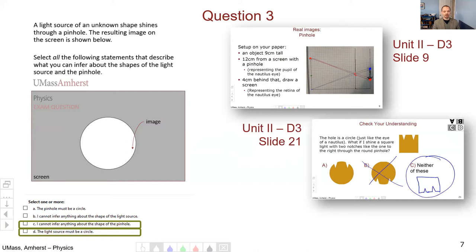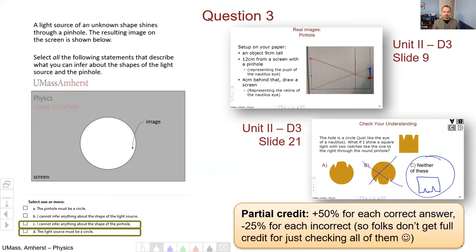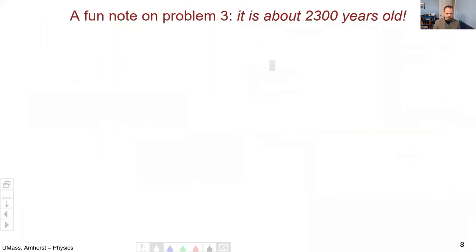This was done on unit two, day three, slide nine, where we made the image from a series of little circles. You can see that would work just as well if the pinhole was a series of little squares, it would work just fine. We had a very similar version to this on unit two, day three, slide 21. This was one of the easier problems according to most people. Partial credit was given here, 50% for each correct answer and minus 25% for each incorrect answer, so folks don't get full credit for just checking all of them.